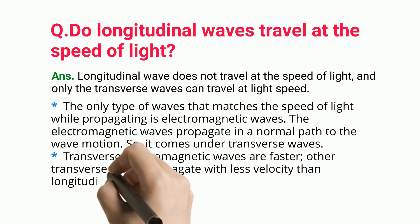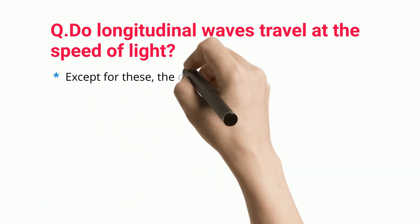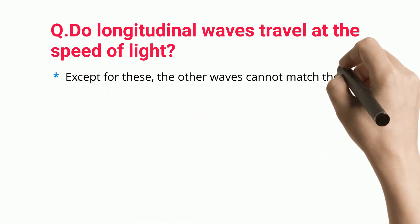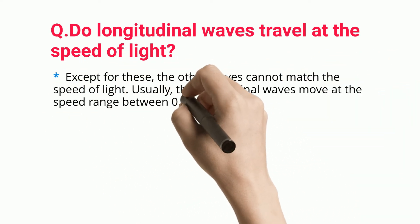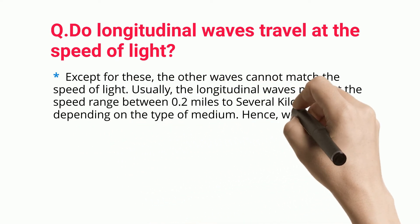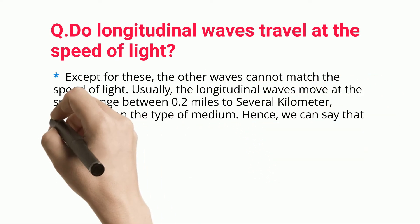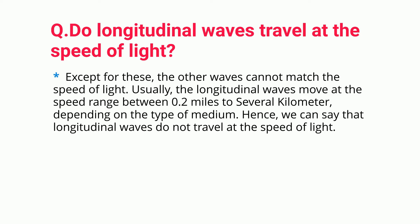Transverse electromagnetic waves are faster, while other transverse waves propagate with less velocity than longitudinal waves. Except for these, the other waves cannot match the speed of light. Usually, the longitudinal waves move at a speed range between 0.2 miles to several kilometers, depending on the type of medium. Hence, we can say that longitudinal waves do not travel at the speed of light.